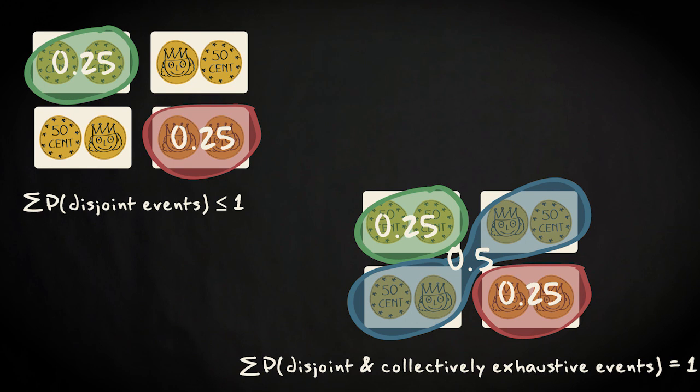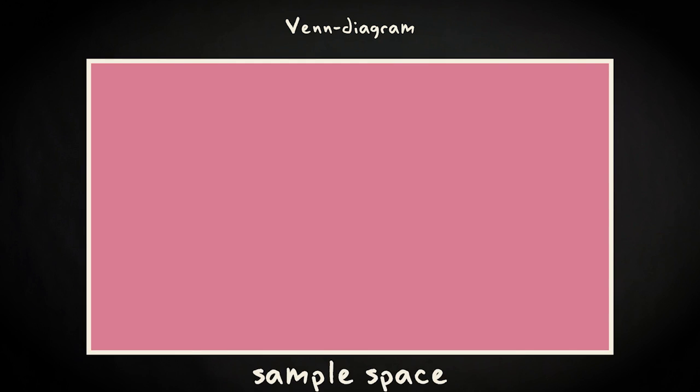These concepts can be intuitively understood with so-called Venn diagrams, combinations of simple geometric shapes that represent sets or parts of sets. This rectangle depicts the sample space.